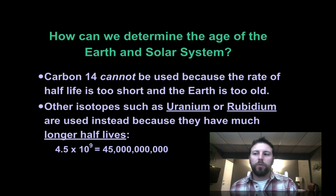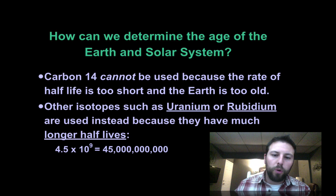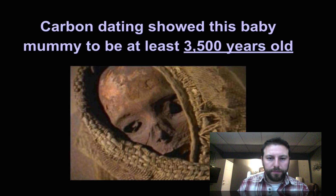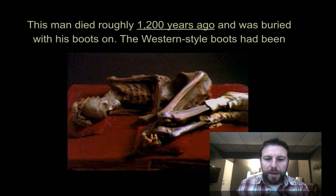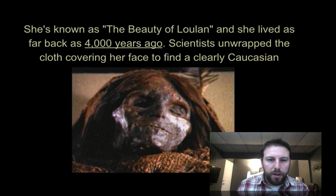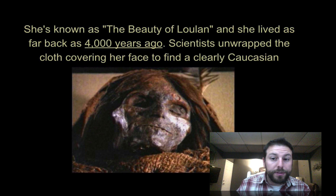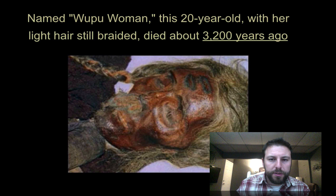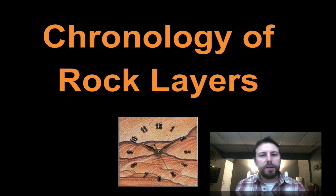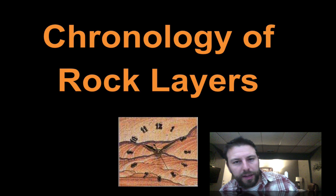Other isotopes have a half-life that makes it easier to figure out the age of older rocks. Looking at some dated artifacts: this mummy died 1,200 years ago, buried with his boots on — they used carbon-14 dating. The Beauty of Loulan lived 4,000 years ago, and the Wupu Woman is 3,200 years old — both dated using carbon-14. That's it, ladies and gentlemen — I hope you enjoyed this screencast, take care!